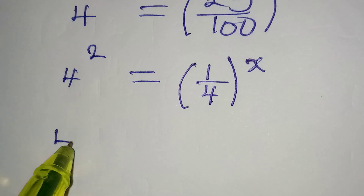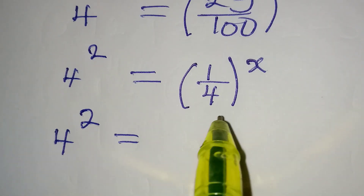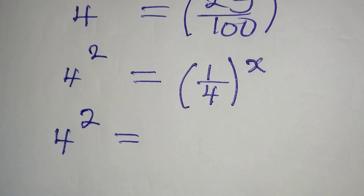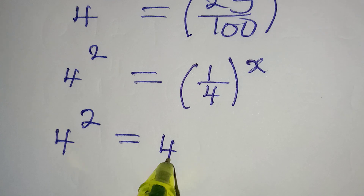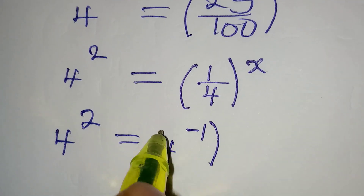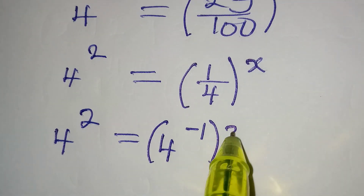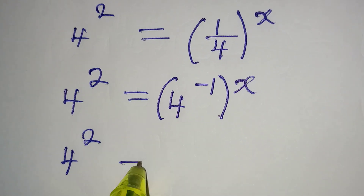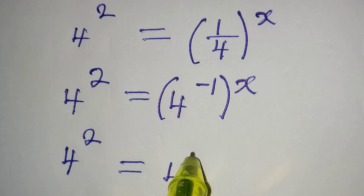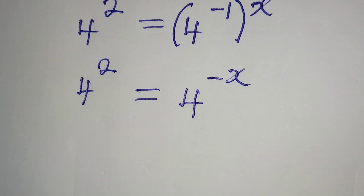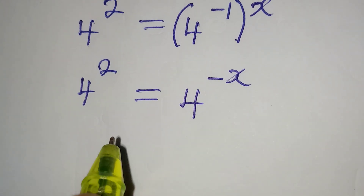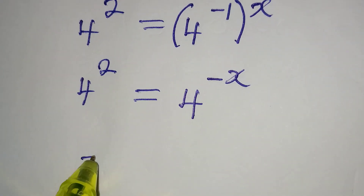4 to the power of 2 is equal to — according to one of the laws of indices — 4 to the power of negative 1, that is for 1 over 4, and we have x on the outside. So from here, 4 to the power of 2 is equal to 4 to the power of negative x. Now we have the same base, so we can equate the powers, giving us negative x equals 2.